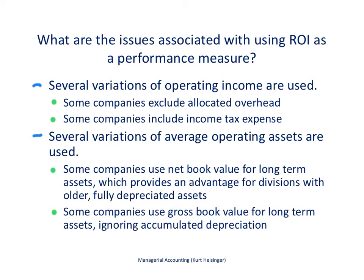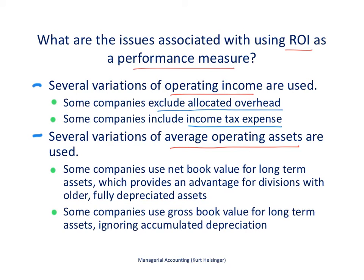There are some issues associated with using return on investment as a performance measure. Essentially, as a company we must decide how we want to calculate operating income and average operating assets, because it's not always clear-cut — and we want to be consistent across all divisions over time. For example, some companies exclude allocated overhead from operating income, while other companies include income tax expense. These are just two examples; there are many more. It's important to be consistent and to communicate the chosen approach to managers within each division.